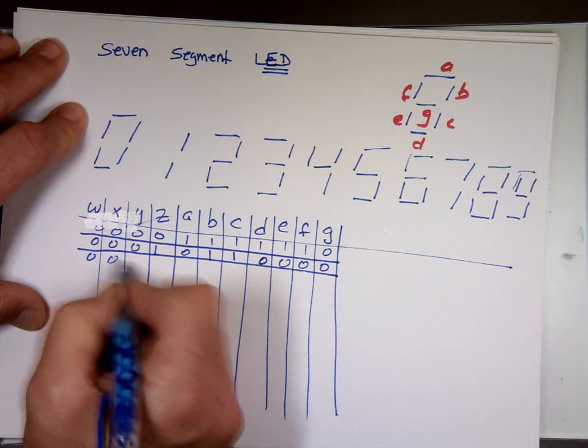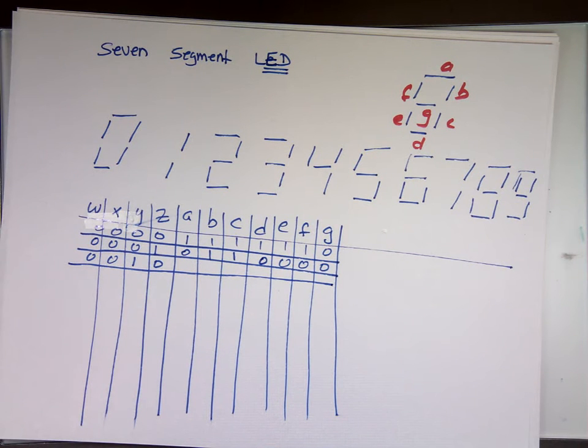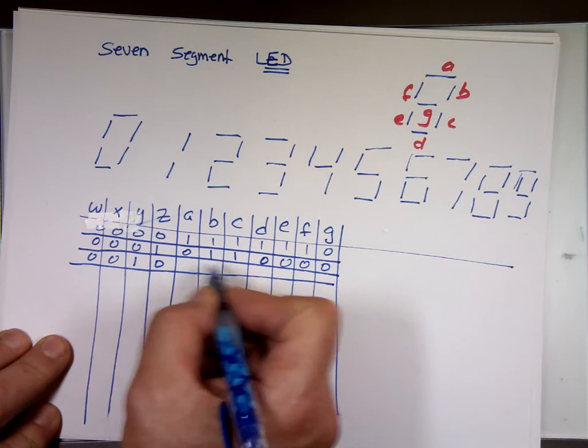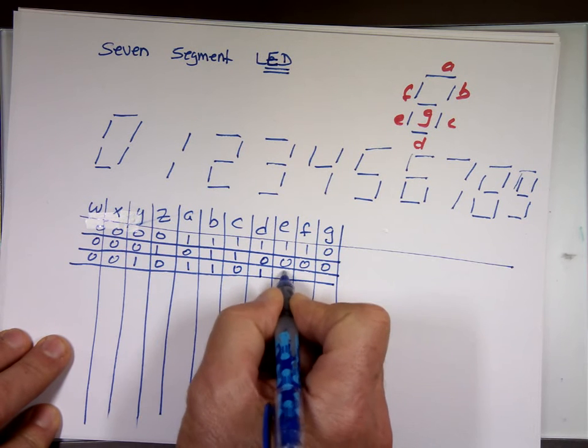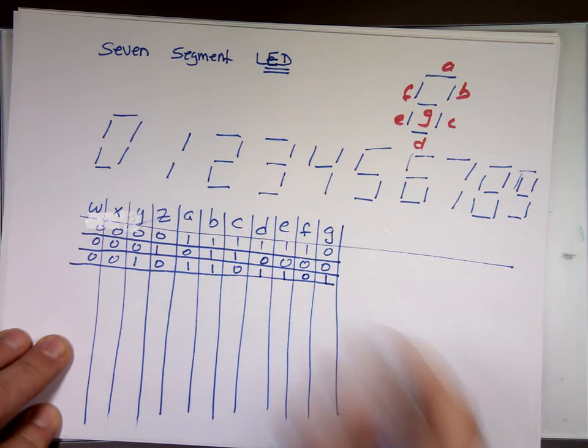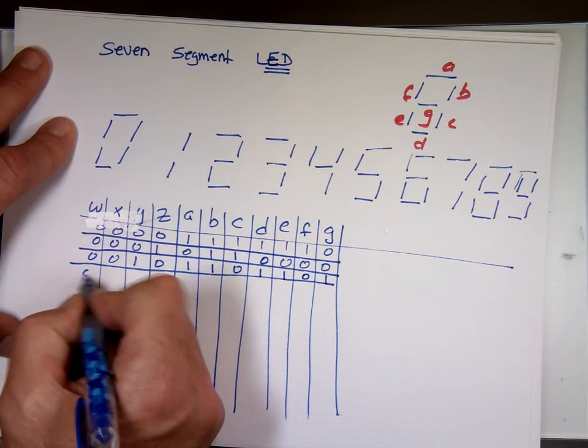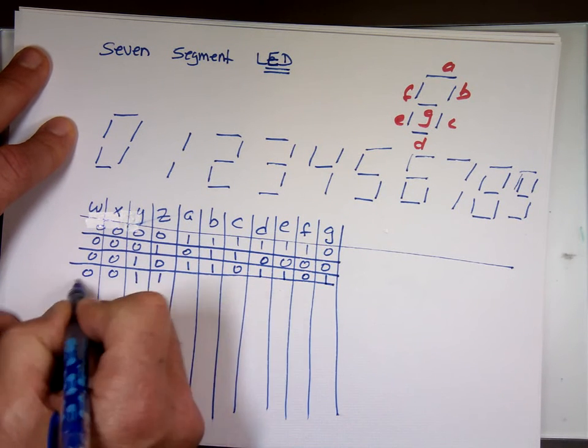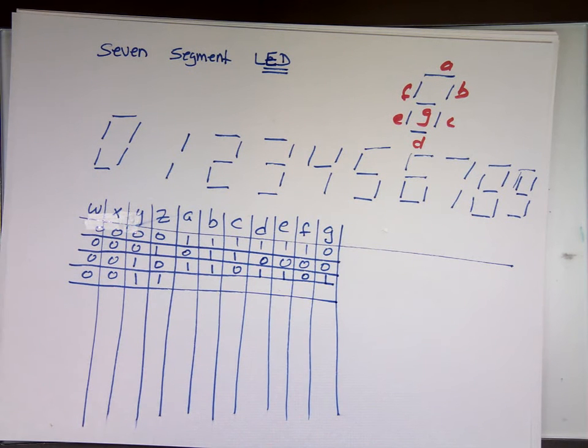0, 0, 1, 0. That's equivalent to what number? Two. So you want F and C to be off. If you type 0, 0, 1, 1, that's a 3. You want F and E off.